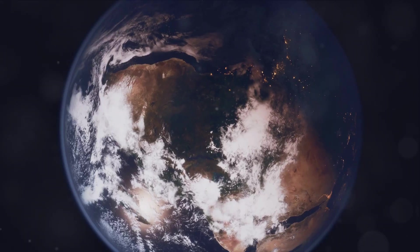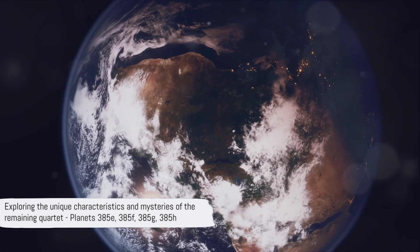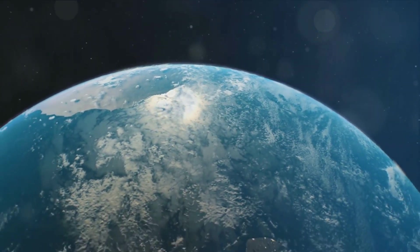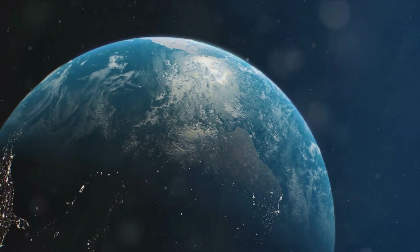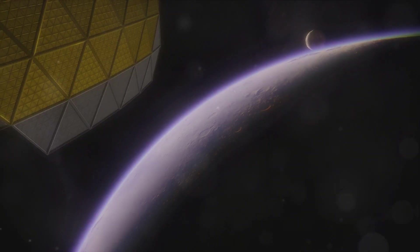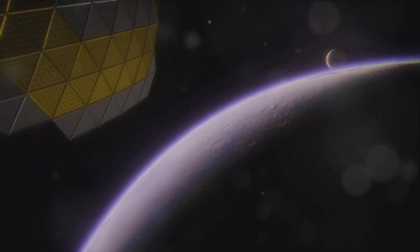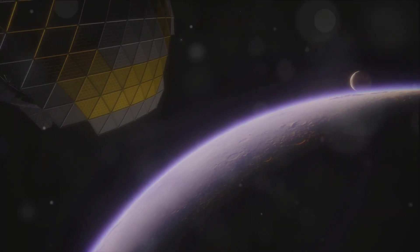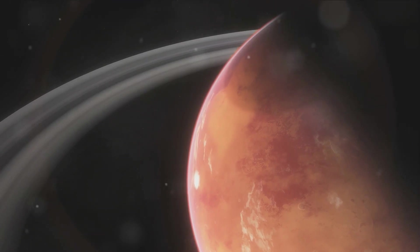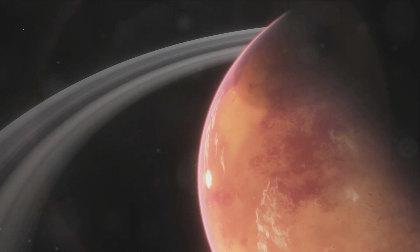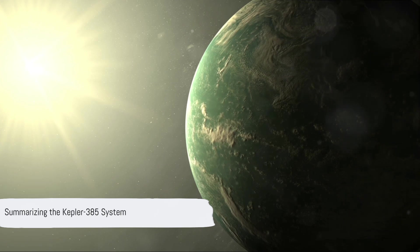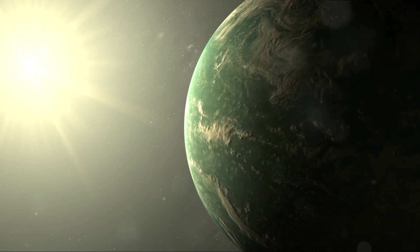Each of these planets presents a unique set of characteristics and challenges for exploration and understanding. From the gas giants 385e and 385g, with their potential for extreme weather systems and intriguing placement within the habitable zone, to the super-Earth 385f with its tantalizing possibility of a rocky surface, and the distant, mysterious 385h. These four planets round out our tour of the Kepler 385 system. Now that we've explored all seven planets, let's take a moment to reflect on what we've learned.